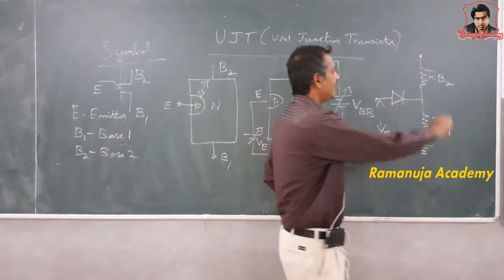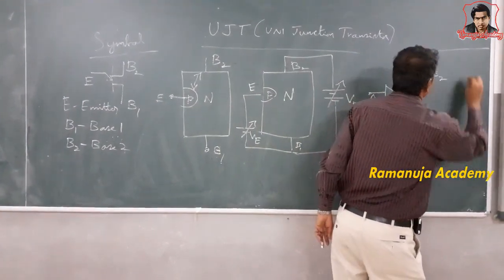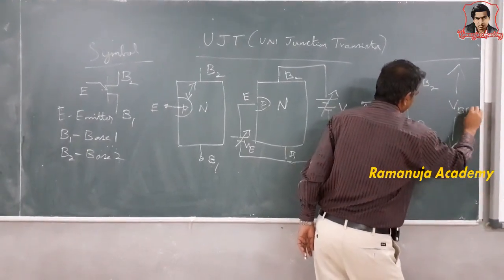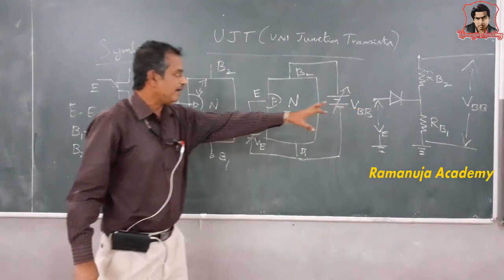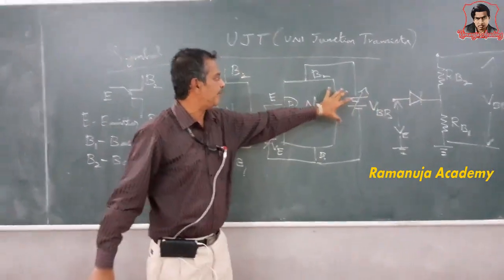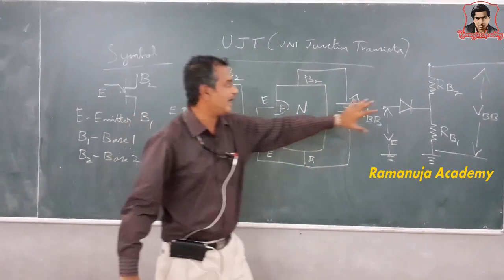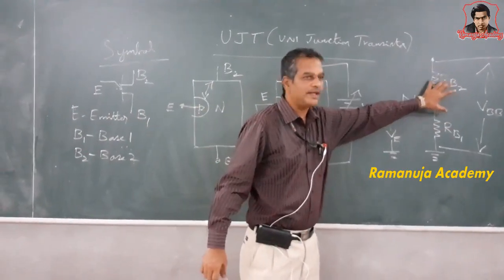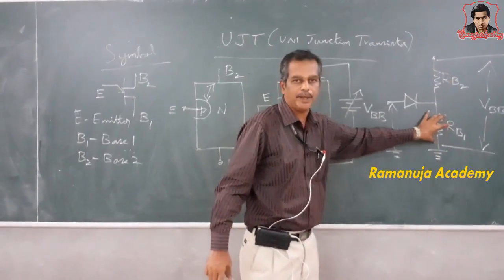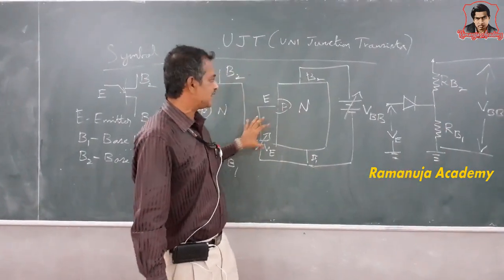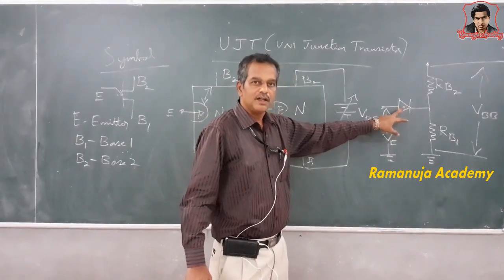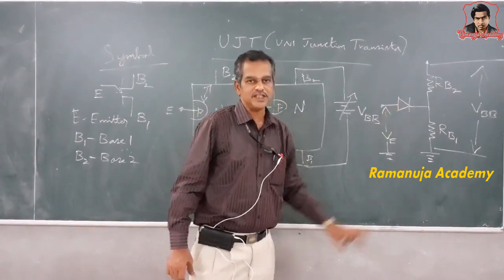The voltage applied here is VBB. The voltage applied between base 2 and base 1 is represented as the voltage applied across resistances RB2 and RB1. The voltage given to the emitter is applied to the anode terminal of this diode.